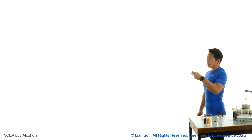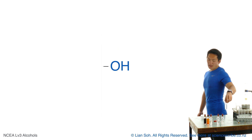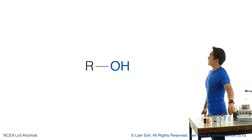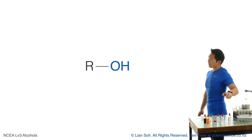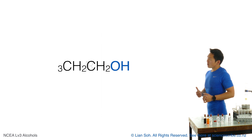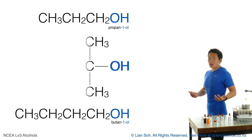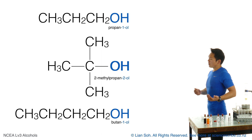When your molecule has an OH group on it, you know you've got an alcohol. Last year when you tried to name alcohols, you probably found that it typically ended with 'ol', so things like propanol, butanol, 2-methylpropan-2-ol — all of these have that 'ol' ending.